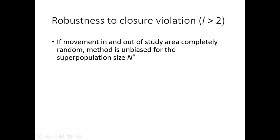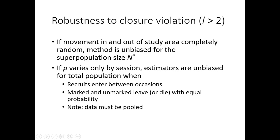When the number of occasions are greater than two and movement in and out of the study area is completely random, the method is unbiased for the superpopulation size N*. If capture probabilities vary only by time, then the estimators are unbiased when recruits enter between occasions and when marked and unmarked animals leave or die with equal probability. However, the data must be pooled appropriately to account for the lack of closure.